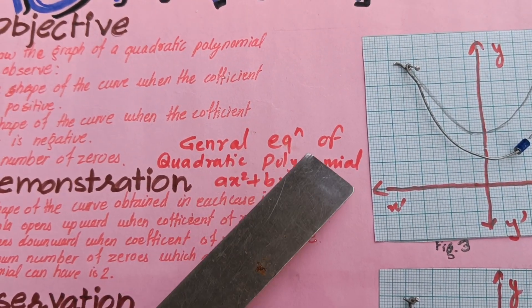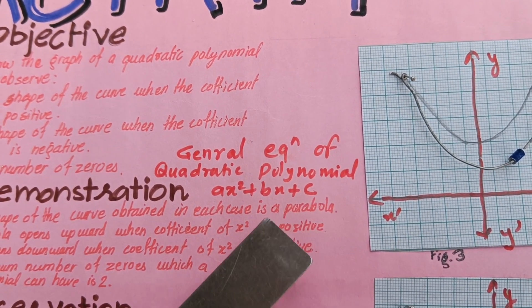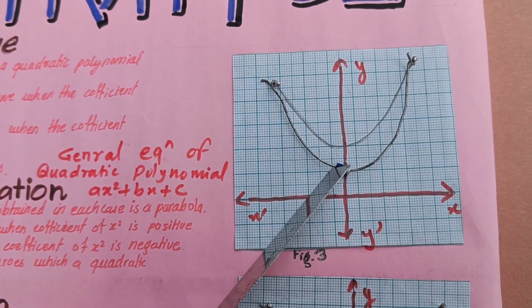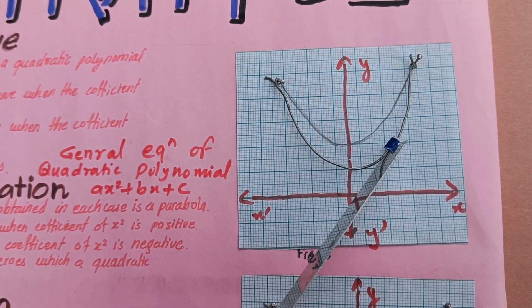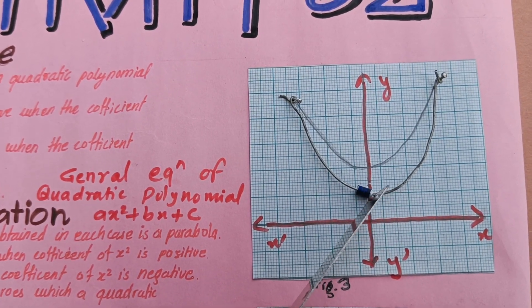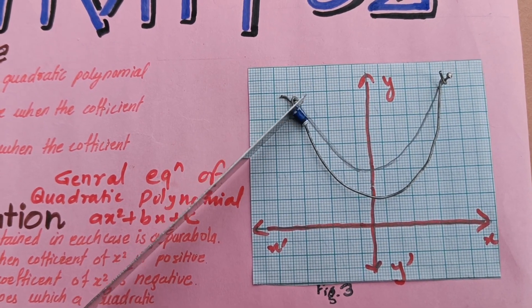As we know, the general equation of quadratic polynomial is ax square plus bx plus c. If a is greater than 0, then the graph of quadratic polynomial is in upward direction. In the first graph, number of zeros is 0 because it does not cut the x-axis anywhere.